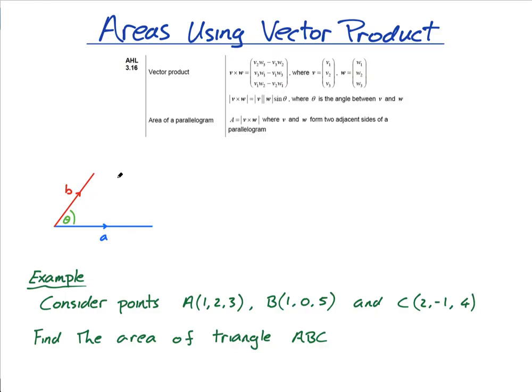So what that means is, if this is a and this is b and this is the angle between them, the parallelogram would be something like this. So if I do a cross b or b cross a, I will get, because it's the modulus of it, I will get the area of that parallelogram.